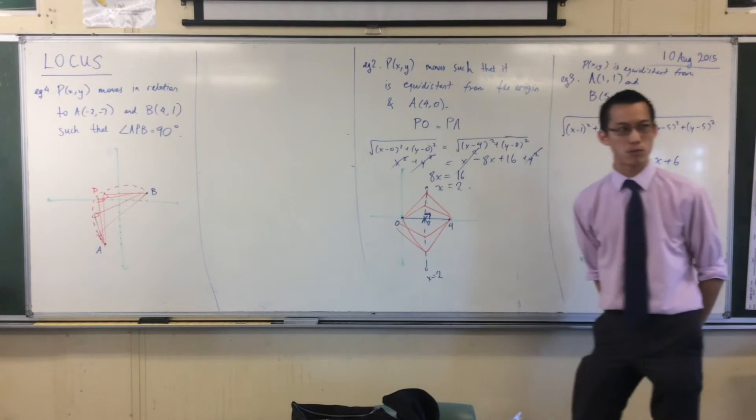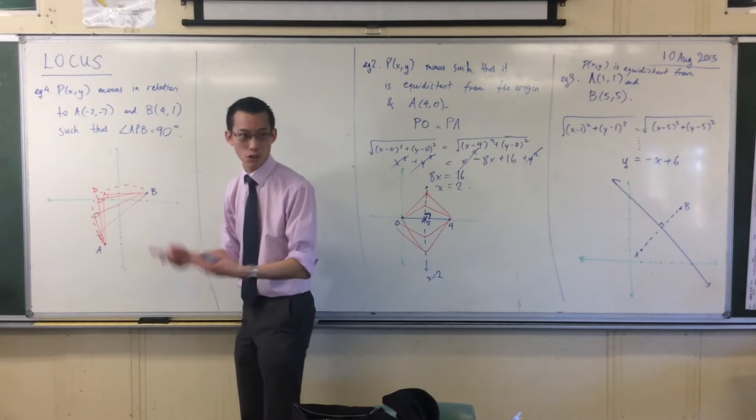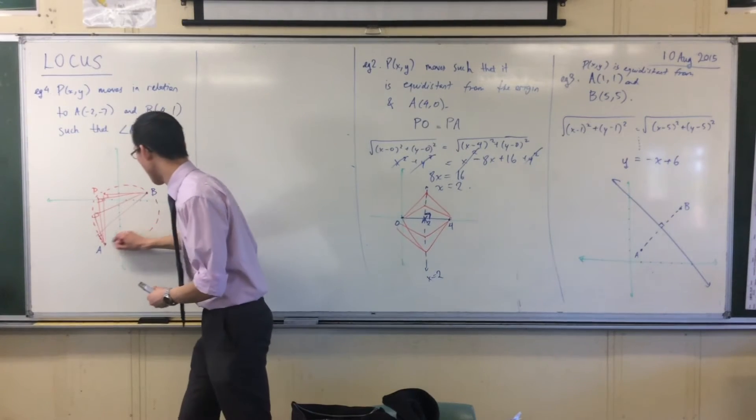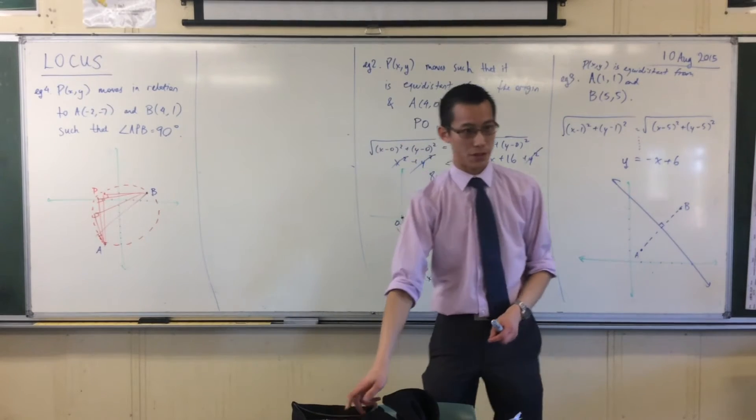The angle in a semicircle is always 90 degrees. That's actually the exact wording of one of the circle properties that you learned. So what I'm tracing out on this side is a semicircle. I can have that 90 degree angle happening on the other side as well, so I'm expecting a circle of some description.